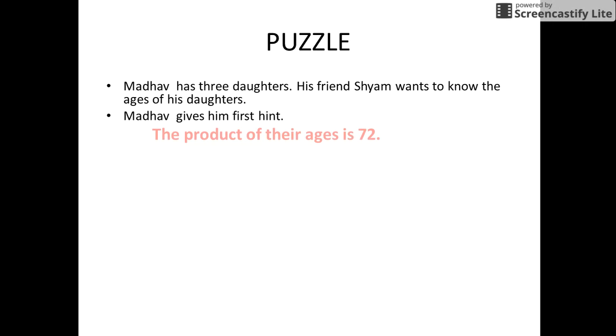So Madhav provides him the first hint: the product of the ages of his daughters is 72. But Shyam is unable to answer the question with the help of this hint.